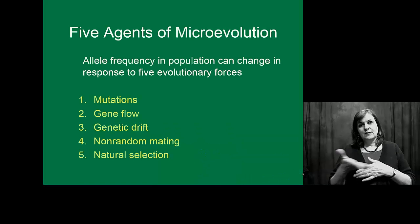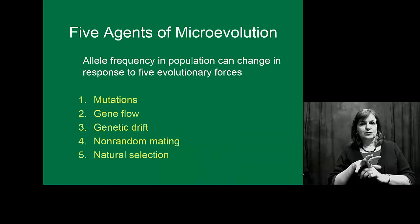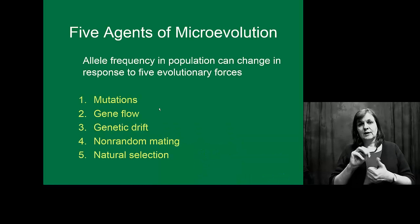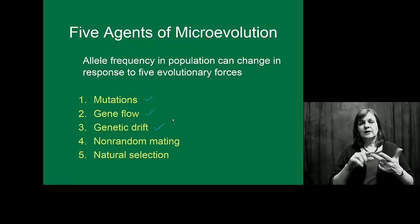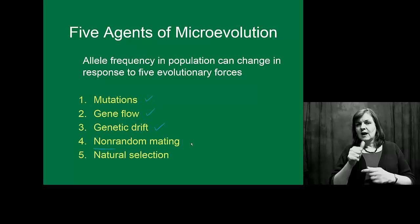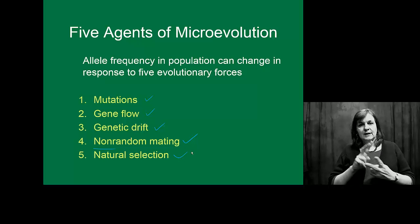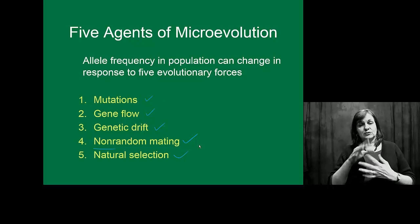There are five major things that work on microevolution: mutations, gene flow, genetic drift, non-random mating, and natural selection.